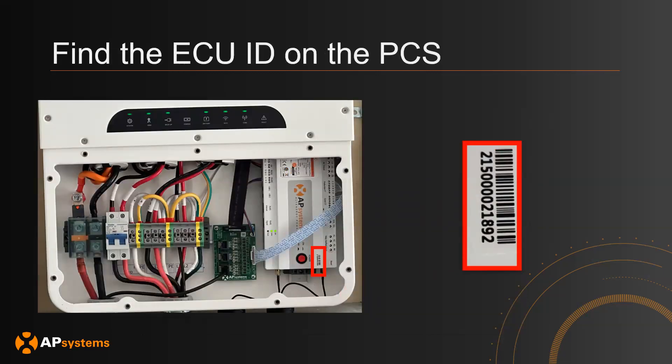Moreover, you're also going to need to find the ECU ID on the PCS. This can be found by opening up the PCS front plate and going to the ECUC, which is on the right side of the PCS. Find the barcode there — this is the number you will use to identify the ECU in the PCS. Make sure you have this number saved to set it up in the account.